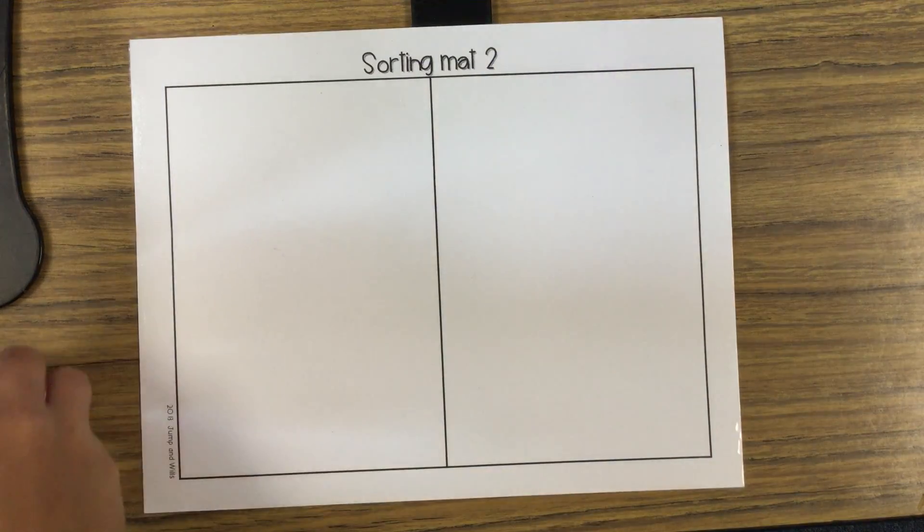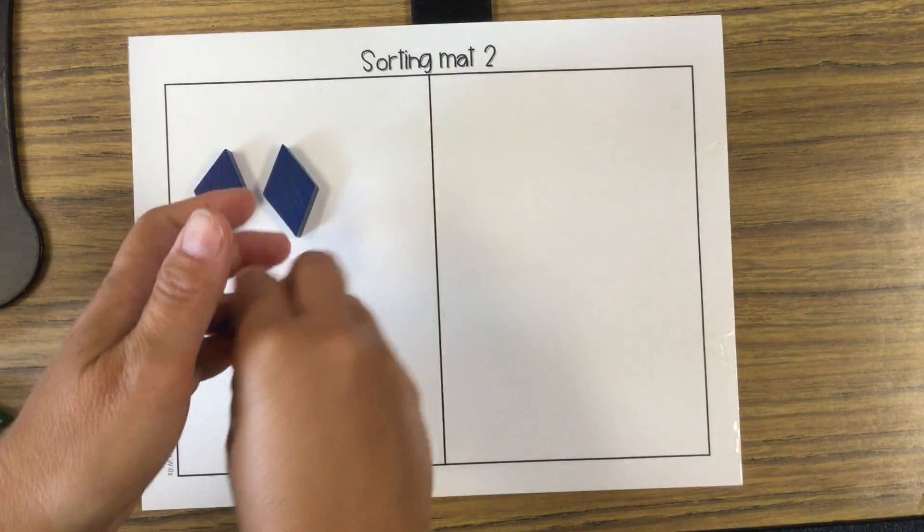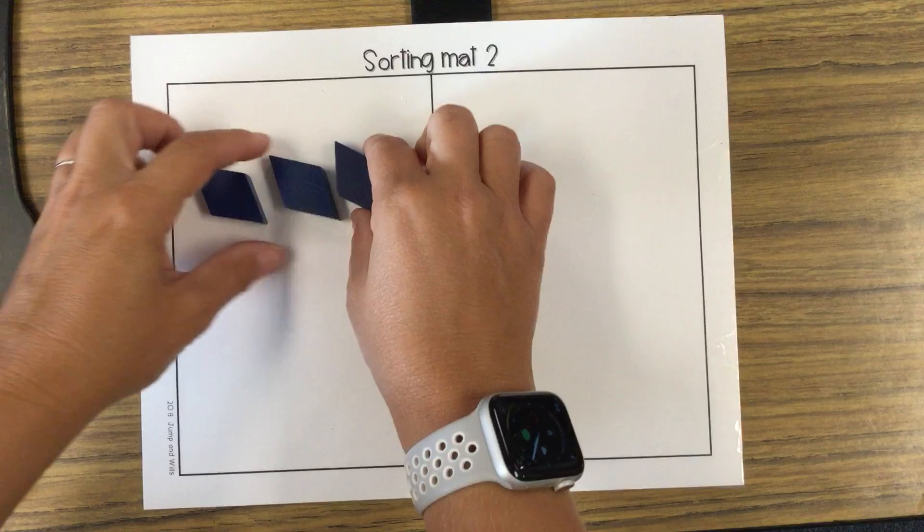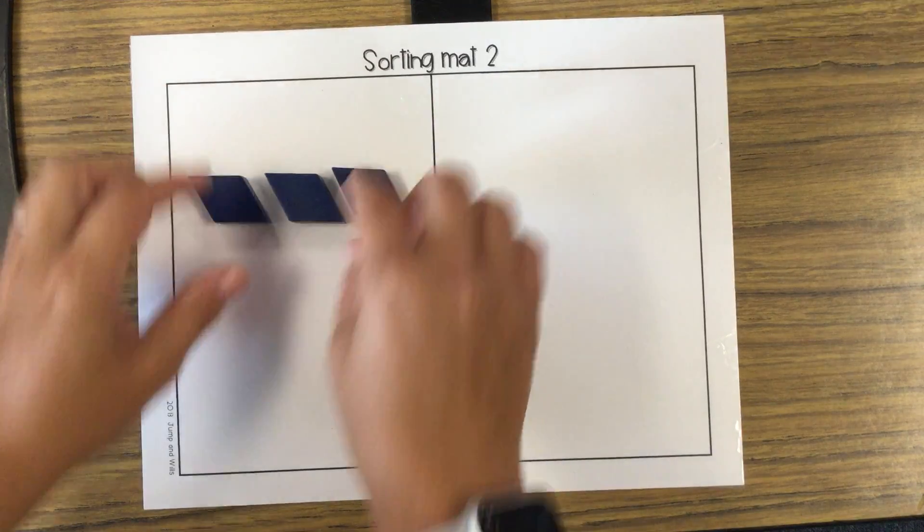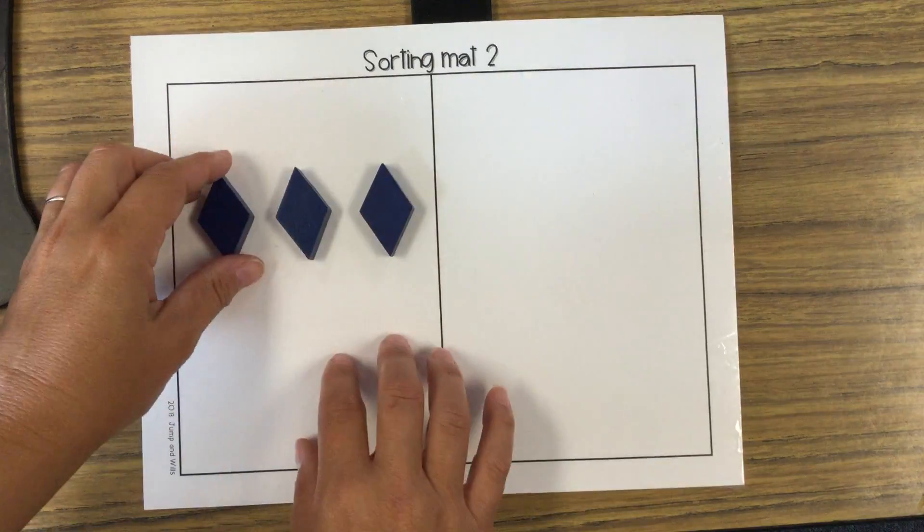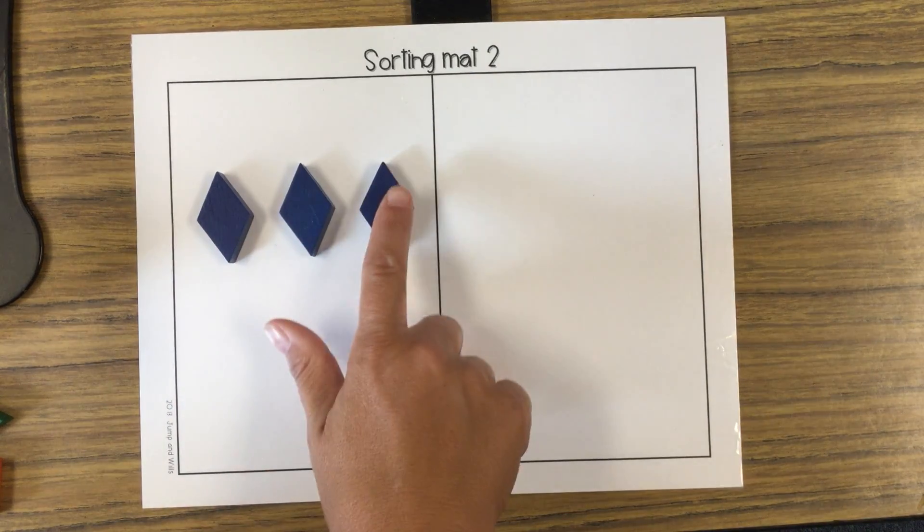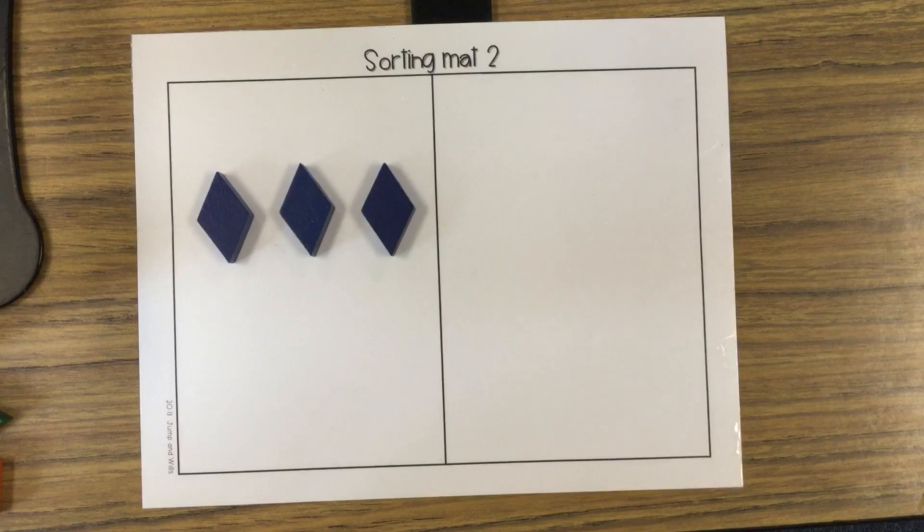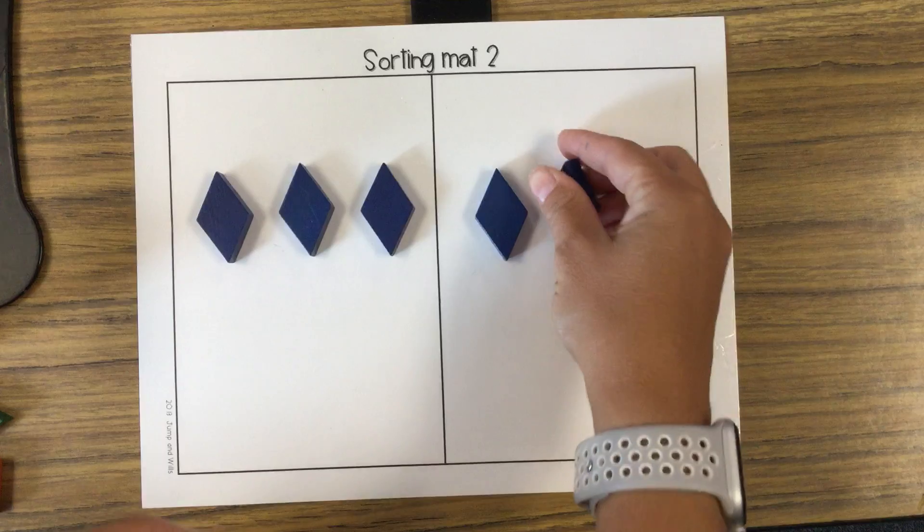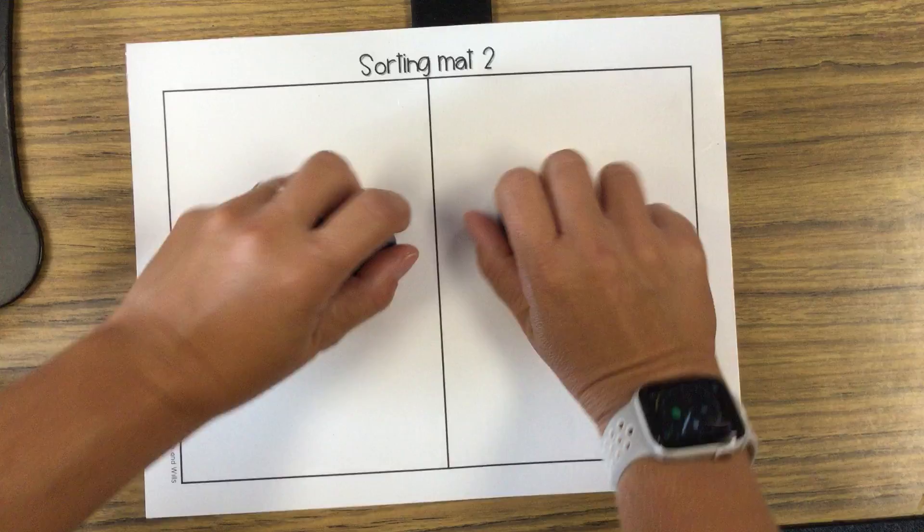All right. Then we have these shapes. Do you know what these shapes are called? Yeah, I bet you said diamonds. But guess what? There's a special name for them. They're called rhombuses. But in kindergarten, we can call them diamonds or rhombuses, whatever you are comfortable with. All right, let's count how many we have. We have one, two, three. And so what we would want to do is match it on the same side or on the other side, so that we would have three and three. They match. They're the same.